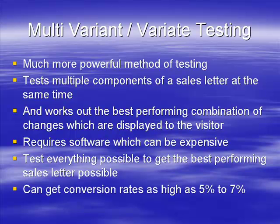When using this software, test absolutely everything — as many different components as possible — so you get the best performing sales letter you can. In some niches you can get conversion rates as high as five to seven percent or even higher with very good copy and a lot of testing. You may start off with your first sales letter at half to one percent, but as you do the multivariate testing your conversion rate will get higher and higher. You can realistically expect three to five percent or even higher with persistence and good tests.